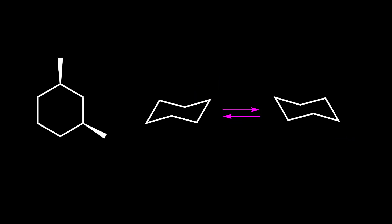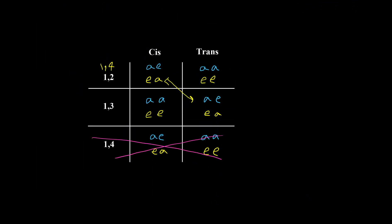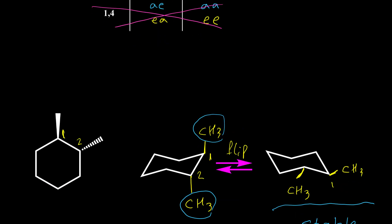Here is the next example: cis-1,3-dimethylcyclohexane. This carbon is number one, then two and three, so the relative position of these two groups is one and three. Referring to the table, for one and three cis we again have axial-axial and equatorial-equatorial.